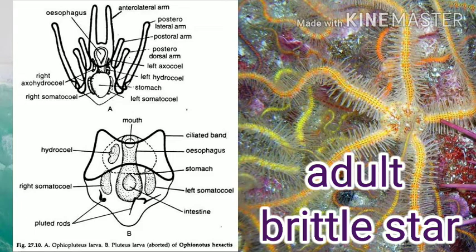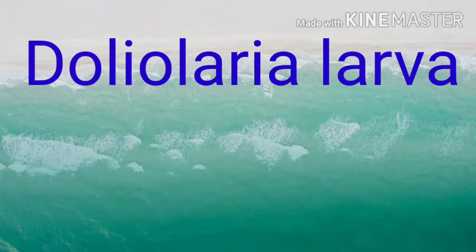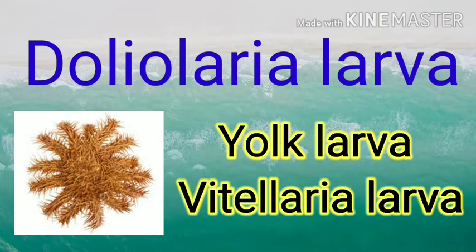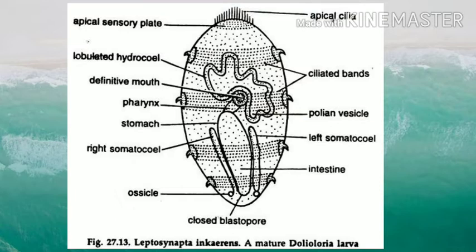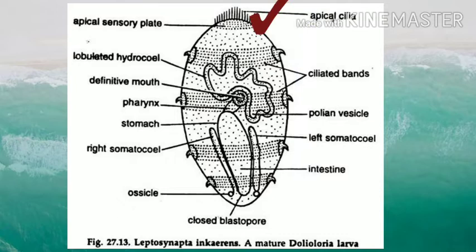The larvae of Crinoidea include two forms: the doliolaria larva and the pentacrinoid larva. The doliolaria larva of Crinoidea is found in the antedon and is also called yolk larva or vitellaria larva. It has a barrel-shaped body with a slightly flattened ventral side. It is free-swimming and exhibits bilateral symmetry. The ciliated bands are formed into four or five separate, transversely placed bands.